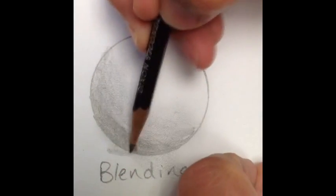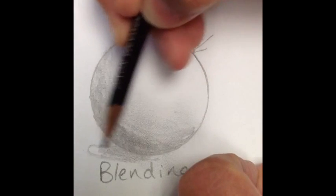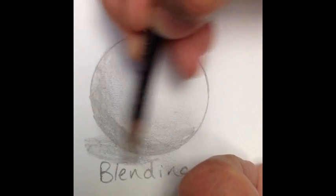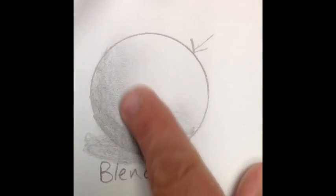Again, don't forget your shadow on the opposite side as the light source. That's blending.